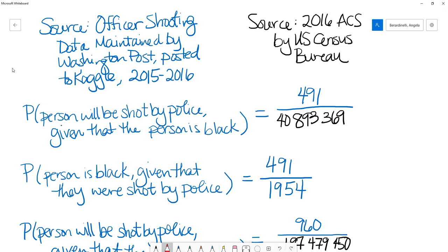In this final video, we're going to summarize some of the statistics that we were trying to verify from the readings for this module. I've tried to color code the sources for each number as best I can here. So the blue numbers are from the officer shooting data that we got from Kaggle, and the black numbers here are from the Census Bureau.